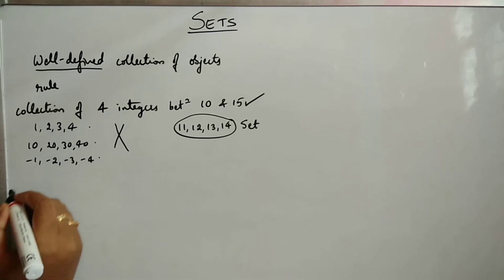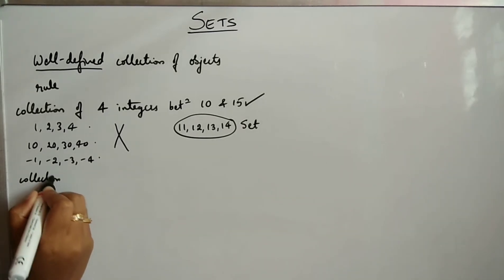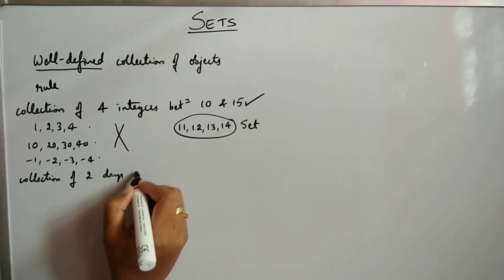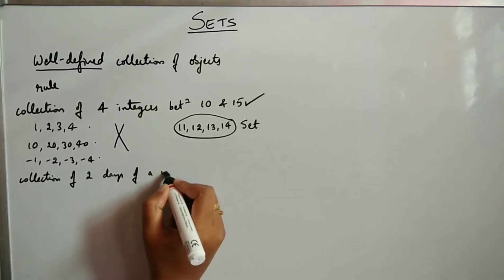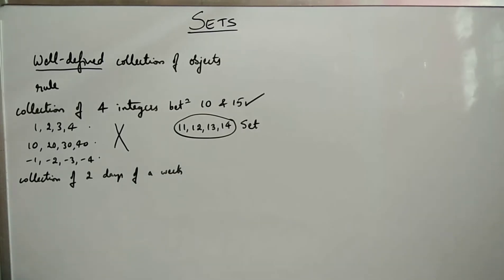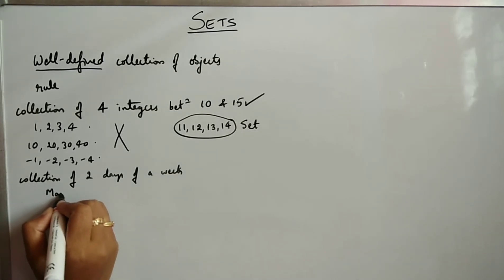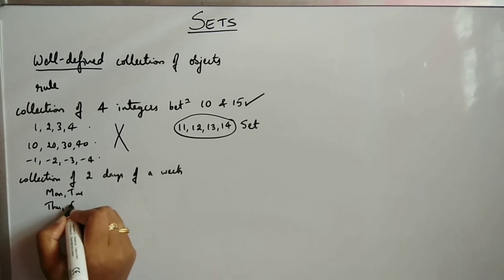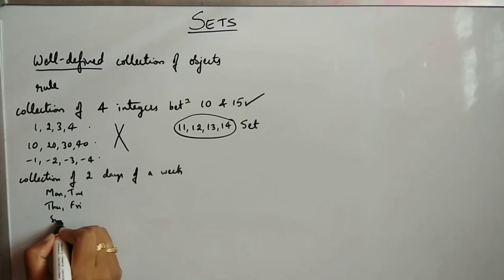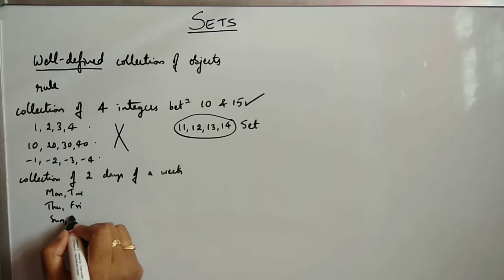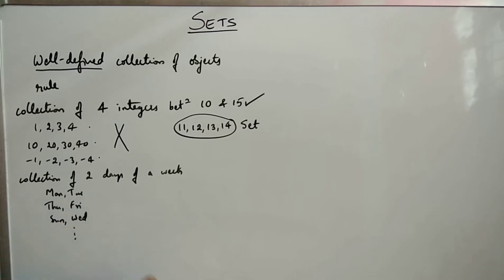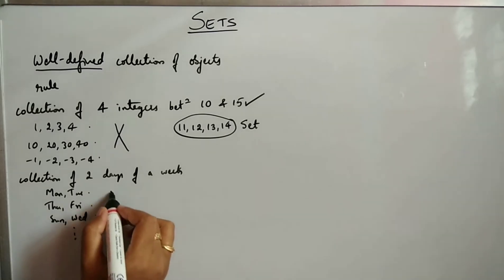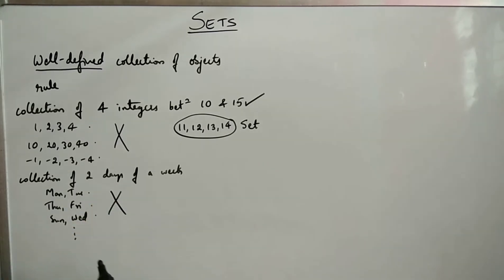Similarly, if I ask you to write a collection of 2 days of a week, one person may write Monday, Tuesday; another may write Thursday, Friday; another may write Sunday, Wednesday, and so on. Here the collection varies from person to person, so this is not a well-defined collection.